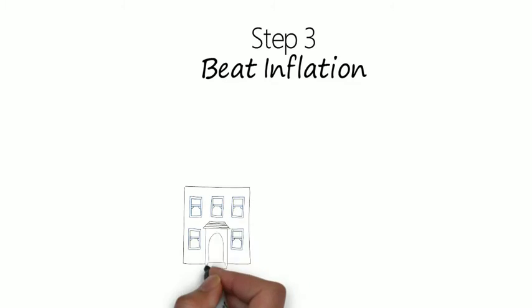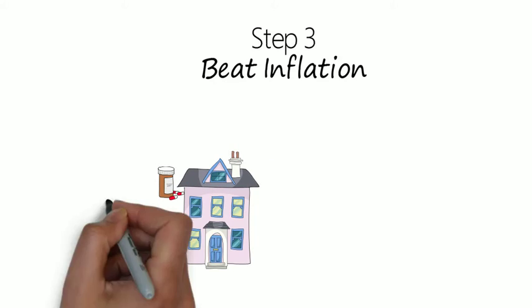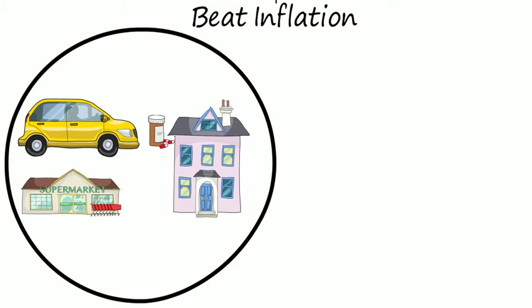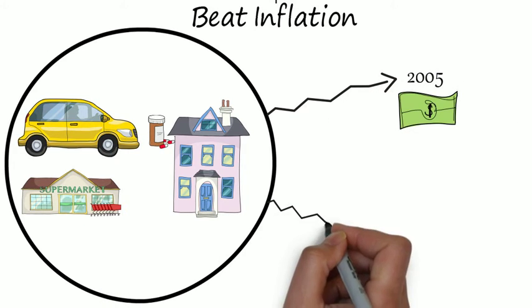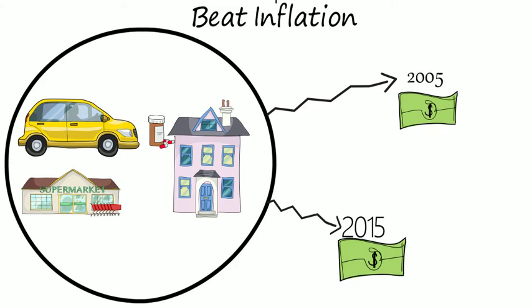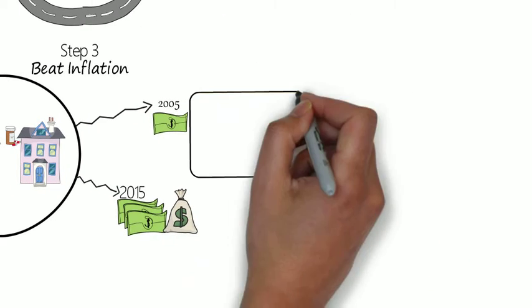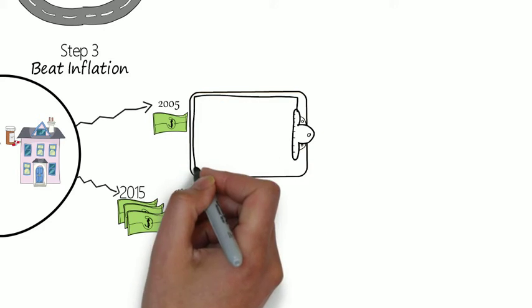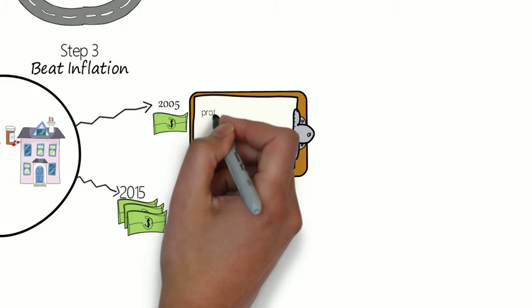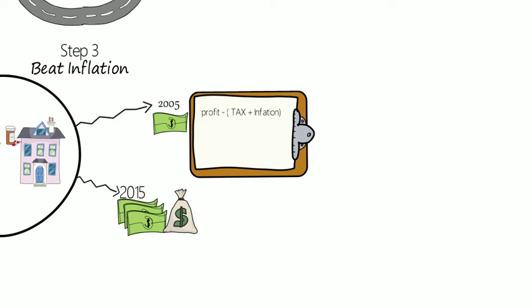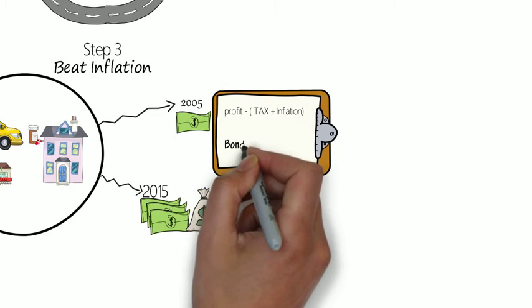Step number three: Beat inflation. Take any of your lifestyle expenses, be it your housing rent, your medical expenses, your car, and each and everything, and combine it into one budget. See in 2005 the amount that you had to spend for that, and in 2015 what is the amount you spent for it. I'm sure that at least in 2015 the money would be double that you spent for the same lifestyle. Now that is because of inflation. So whatever you invest in, don't just think about profit. Think about profit which comes after you pay your taxes and after inflation. And for that, you invest in real estate or gold or equity market in the long term.